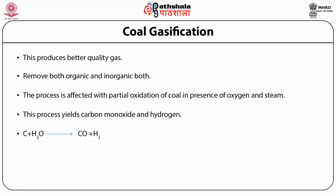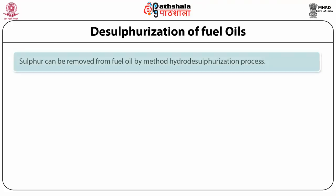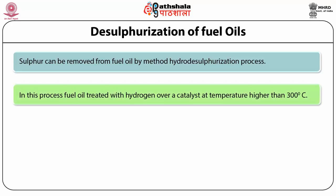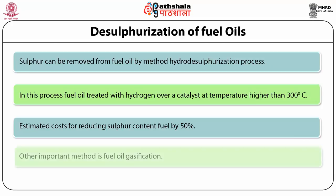The next method is desulfurization of fuel oils, where sulfur can be removed by the hydrodesulfurization process. In this process, fuel oil is treated with hydrogen over a catalyst at temperatures higher than 300°C. The estimated cost targets reducing sulfur content in fuel by 50%. Another important method is fuel oil gasification.